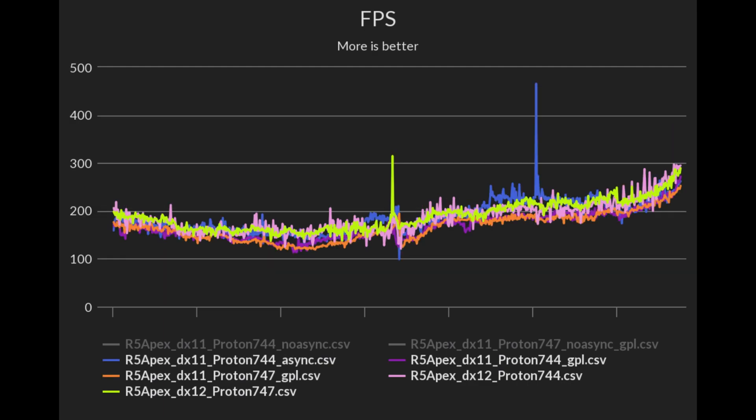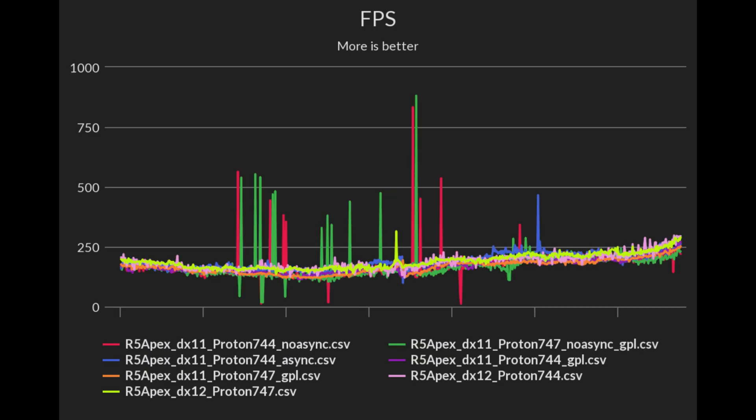Now we are looking at both async and GPL compared to DX12. DX12 is the most stable and as previously seen, async is beating GPL. Lastly we have all the benchmarks, and here it clearly stands out how async, GPL, and DX12 affect the FPS achieved in Apex Legends.